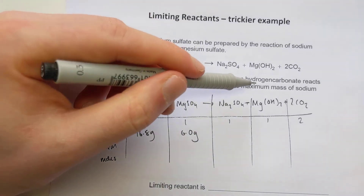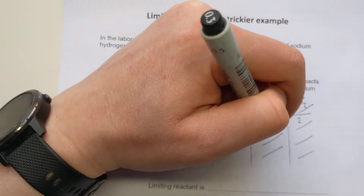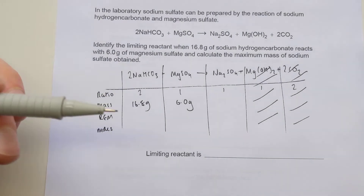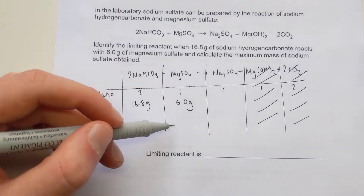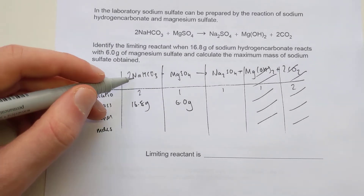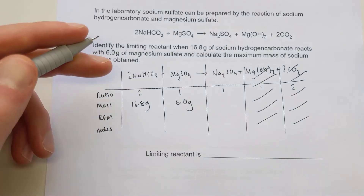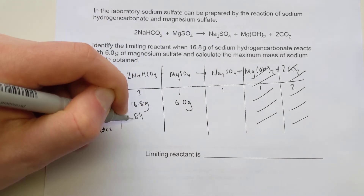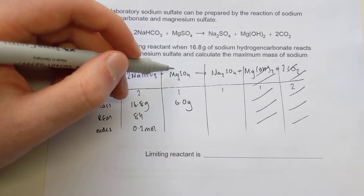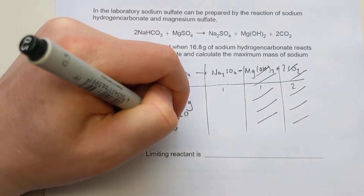What I'm trying to calculate is the maximum mass of sodium sulfate obtained - so the final two columns don't matter. First, work out the limiting reactant by converting all masses to moles. Moles equals mass over RFM. The RFM of sodium hydrogen carbonate - ignoring the big two because it's just for balancing, not part of the formula - is 23 plus 1 plus 12 plus 3 sixteens, which gives 84. So 16.8 over 84 is 0.2 moles. For magnesium sulfate: 24 plus 32 plus 4 sixteens is 120, so 6.0 over 120 is 0.05 moles.